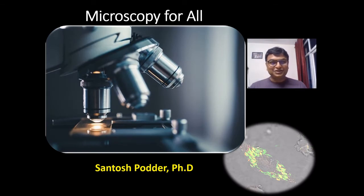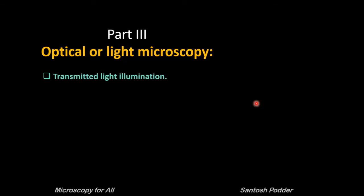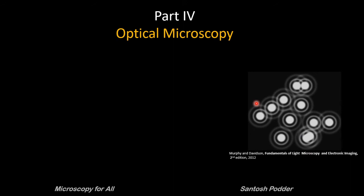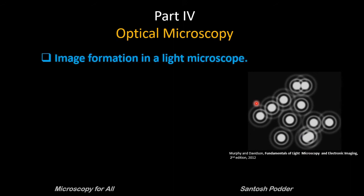Hi everyone, this is Shantosh and you are watching my YouTube channel Microscopy for All. In my last video I talked about the transmitted light illumination train, different components of a bright field microscope and their functions, and finally I spoke about color illumination and its importance before starting with transmitted light microscopy. This will also help you to understand how an image is formed in a light microscope, which we are going to learn today.